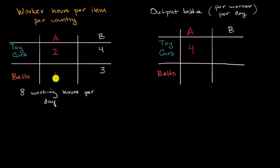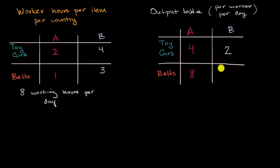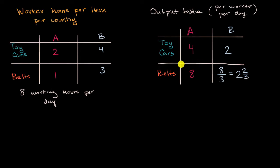Similarly for belts, if I have eight hours and it takes an hour for a worker to make one belt, then per worker per day — eight divided by one — I could produce eight belts. We could do the same thing for country B. In country B, if it takes four hours to produce a toy car per worker, you take eight hours divided by four hours, so you could produce two toy cars in a day per worker. If it takes three hours to produce a belt, you take your eight hours, divide by three hours per belt, and you're going to be able to make eight-thirds belts per worker per day — the same thing as two and two-thirds belts per worker per day. We can easily translate between the input world and the output world, and then use this to calculate opportunity cost.